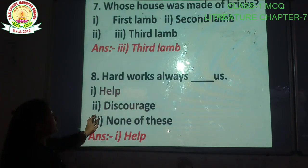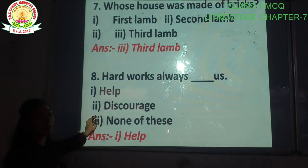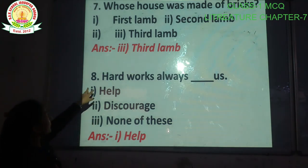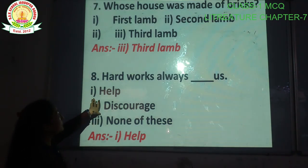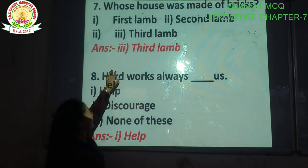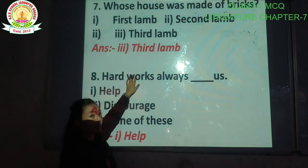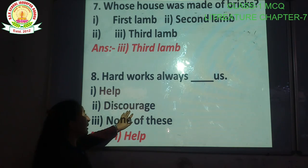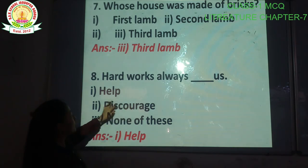Question number seven: whose house was made of bricks? Bricks ka ghar kisne banaya? Options: first lamb, second lamb, third lamb. Whose house was made of bricks? The correct answer is option number three, third lamb. Third lamb ka ghar bricks ka bana tha — aur toota bhi nahi tha.